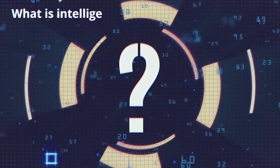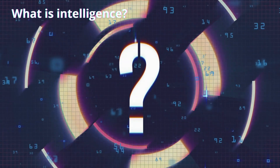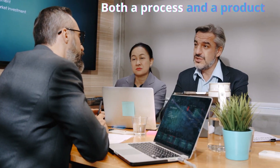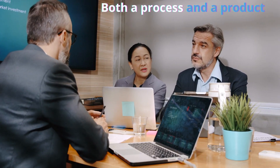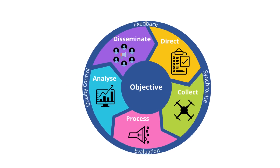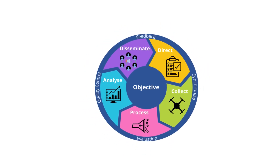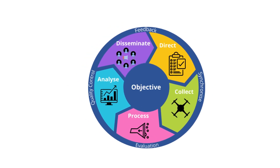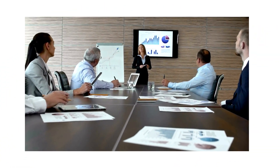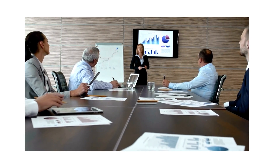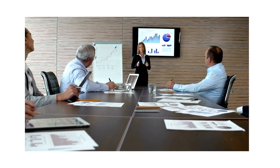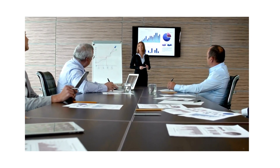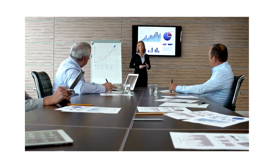So first, what is intelligence? Intelligence is both a process as well as a product. When we're talking about the process, we're really talking about this cycle that we're about to discuss today. And when we're talking about a product, we're simply talking about that product which is produced by that process, which we disseminate to support decision making.